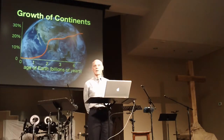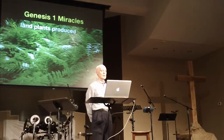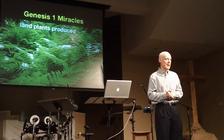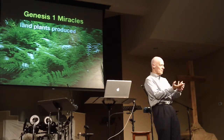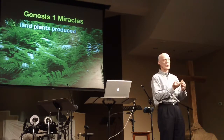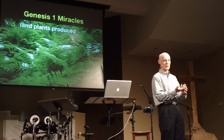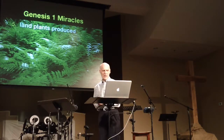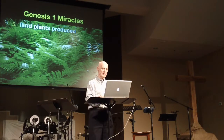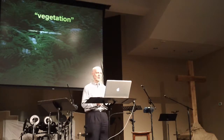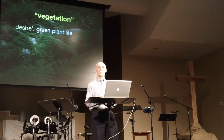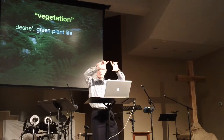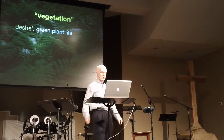Then we move into the second half of creation day three. What does the text say? Let the land produce plants. There's been some debate about what the Hebrew means by 'produce' — three possible interpretations: God supernaturally produced all the plant species, God did it through natural process, or God did it in a combination of natural process and supernatural intervention. The text begins by saying God created vegetation, and the Hebrew word for vegetation is deshev, meaning green plant life. Any plant that is using photosynthesis is included in this highly generic term.